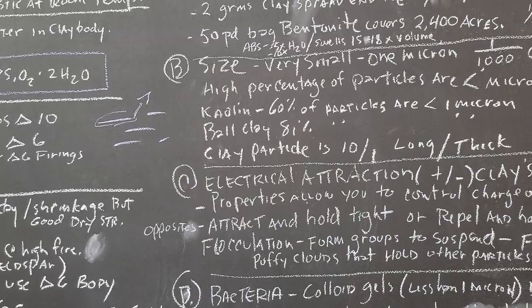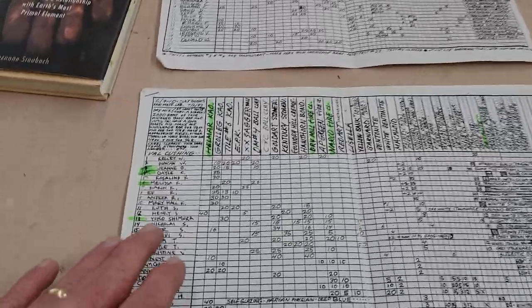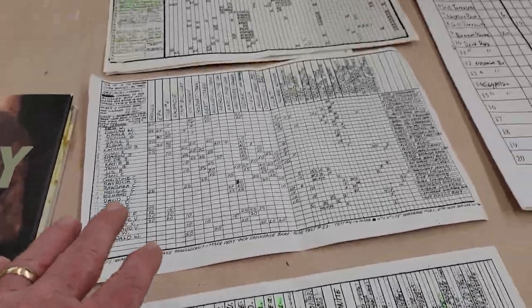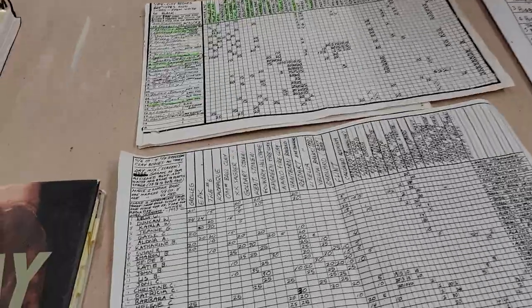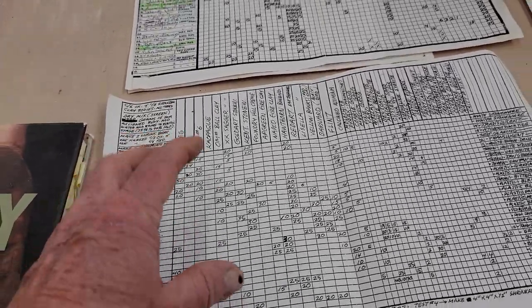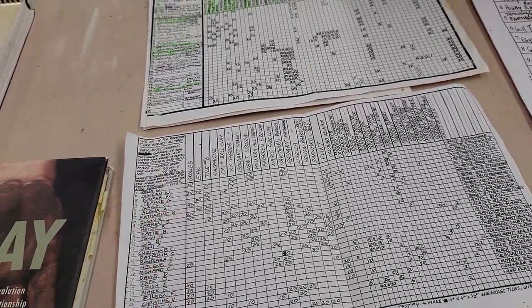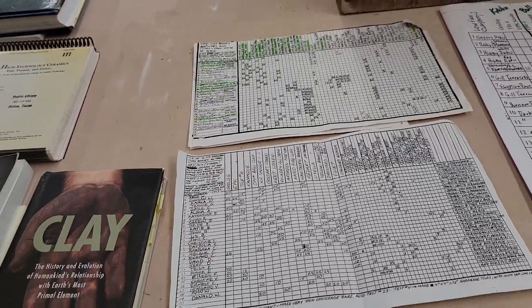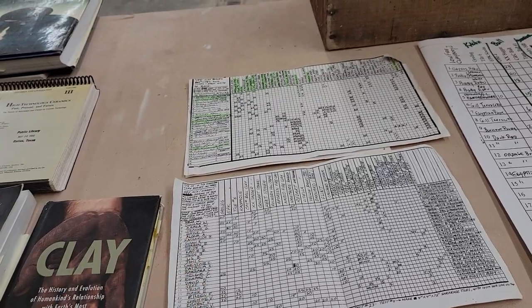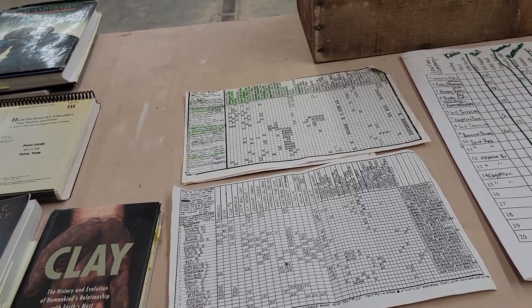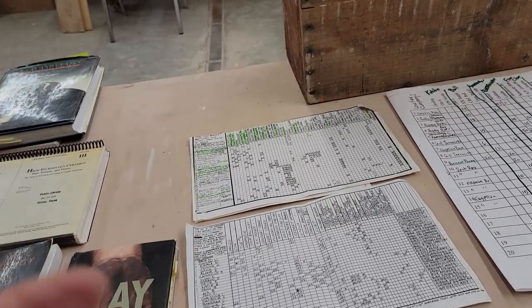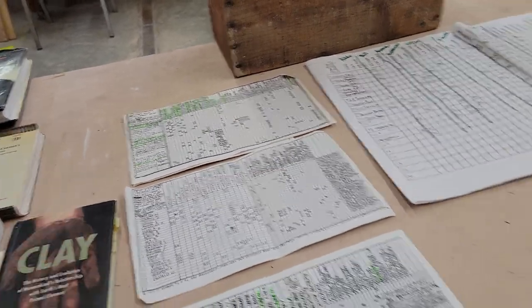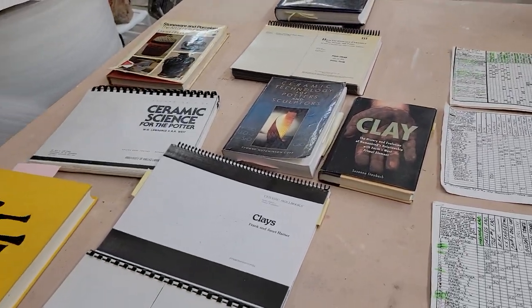One of the best things I ever did was take a bunch of recipes, mix them up in 1,000-gram batches — about two pounds — blend them with a blender, then pour the slip onto a plaster bat. Within about a half hour I could use it and test what different clays did.